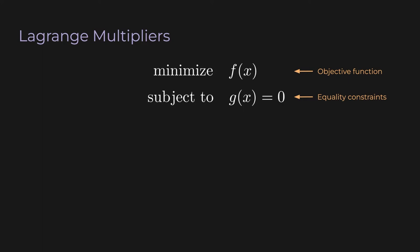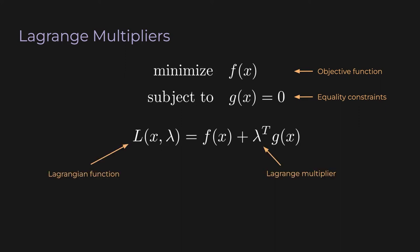The method of Lagrange multipliers is an elegant way to solve this problem. Normally, when we want to minimize some function, we take its derivative and set it to zero. But we can't do that here because of the equality constraints. The trick is to combine the objective function and equality constraints into one new function: L of x, lambda — the Lagrangian function. We take the objective function and add the product of the equality constraints and a vector lambda, called the Lagrange multiplier.